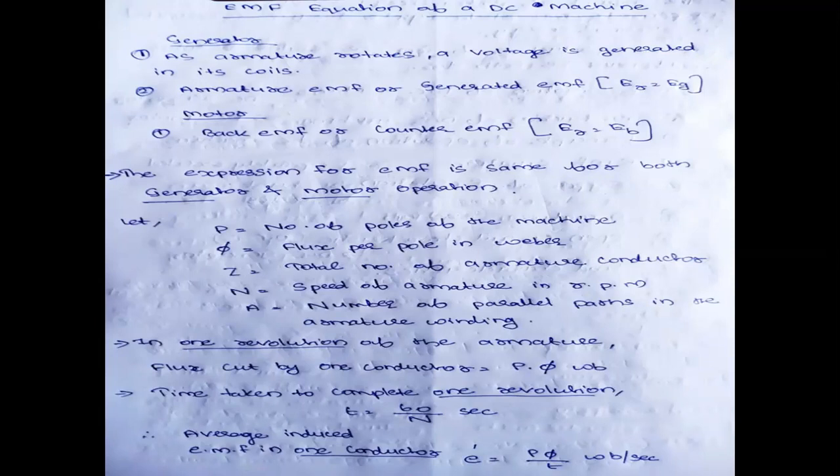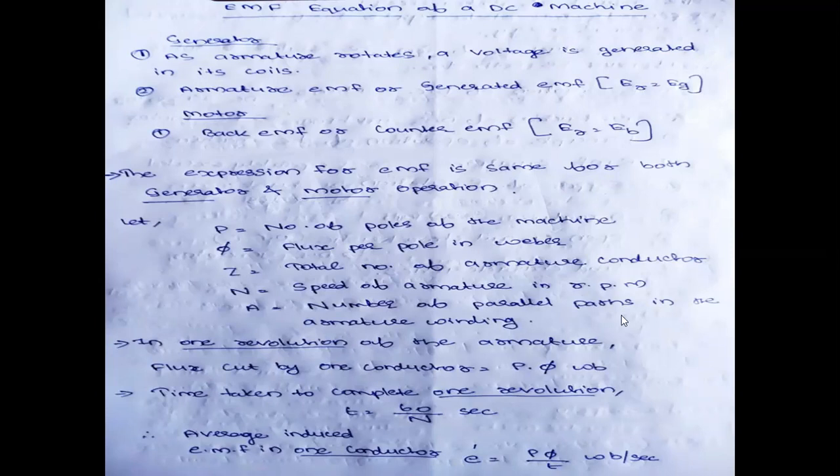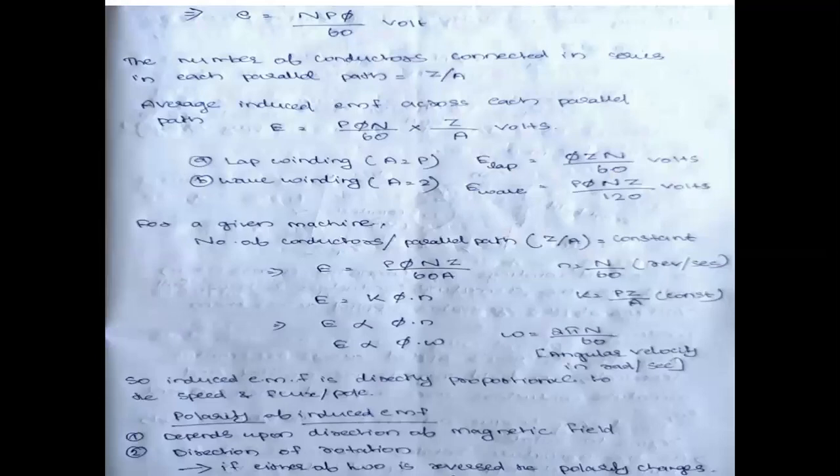Therefore, the average induced EMF in one revolution will be flux divided by time: P × phi divided by (60/N), which gives NP × phi / 60. EMF is in Weber per second. We know that small t here is 60/N, so substituting we get: E = P × phi × N / 60. So we have reached this intermediate result.